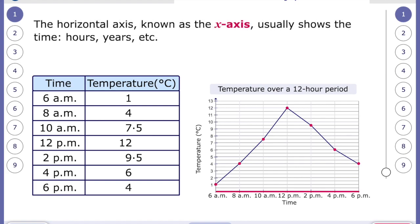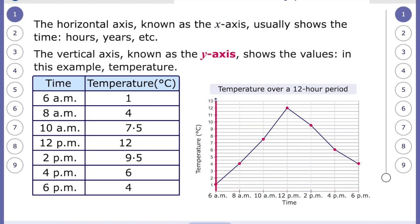Our horizontal axis which is the x-axis usually shows the time. So today in this example it's hours but it could be years, it could be minutes. And the vertical axis, the y-axis, y to the sky shows the values. So here we have the value temperatures. But it could be speed as another axis obviously.